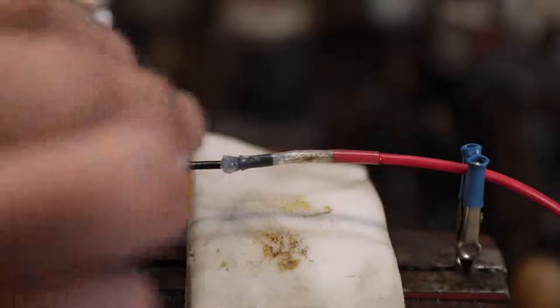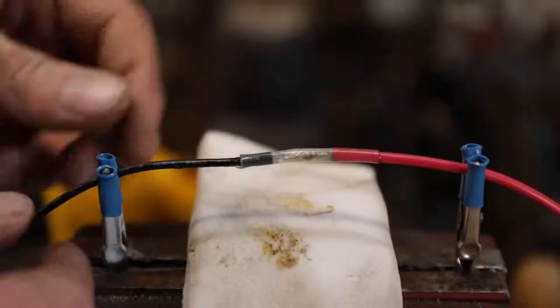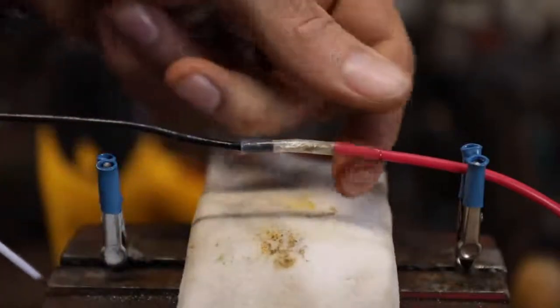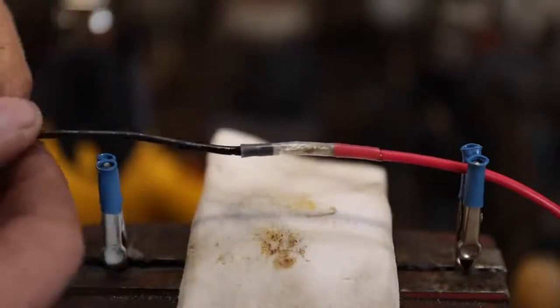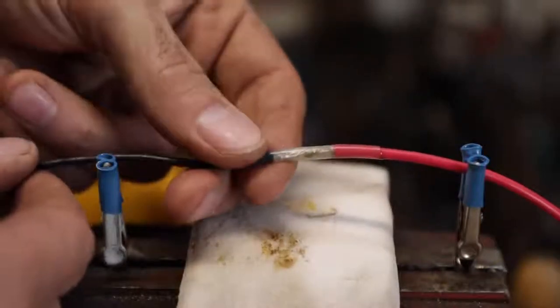Once that's cool to the touch, you can clean that silicone off there and you have a really good, as good as you're going to get, a waterproof connection for joining two wires together. That's probably going to be tougher than the wire itself.